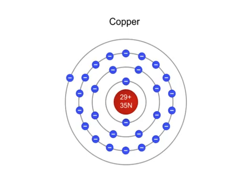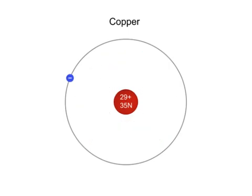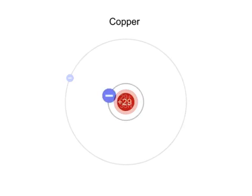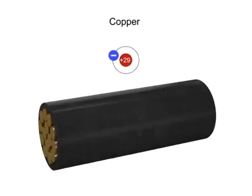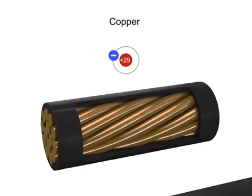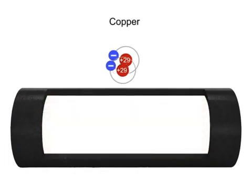Let's take a more detailed look at how these free electrons flow when a voltage is applied across a copper wire. Taking a simplified version of a copper atom with its single valence electron, let's distribute copper atoms along the length of a copper wire.